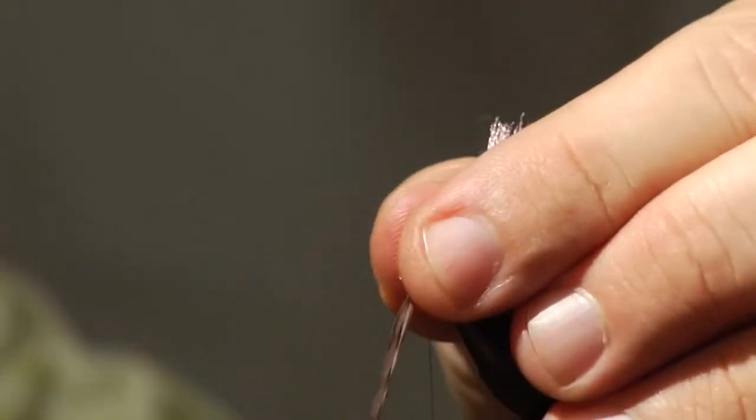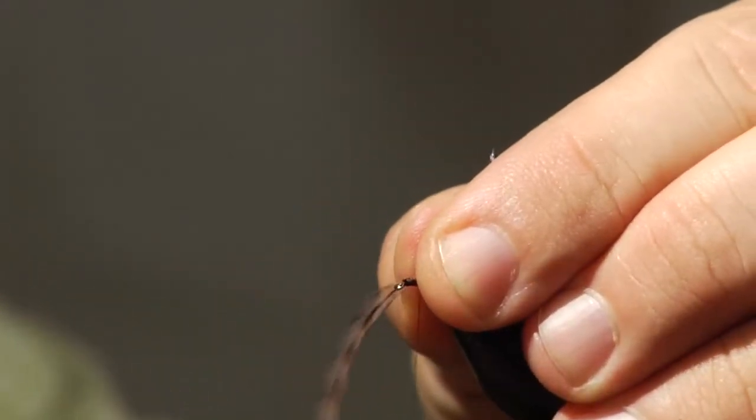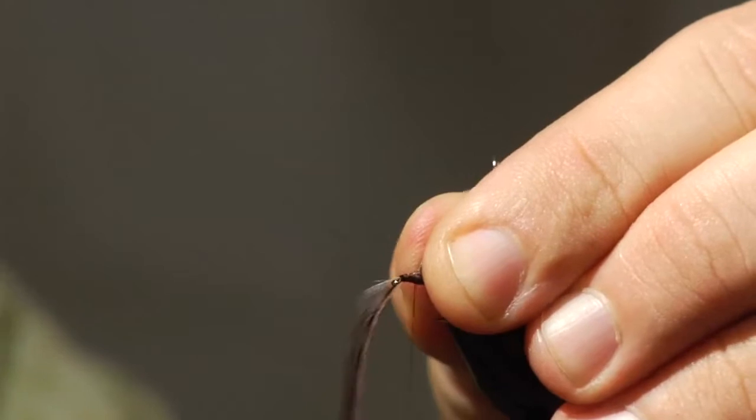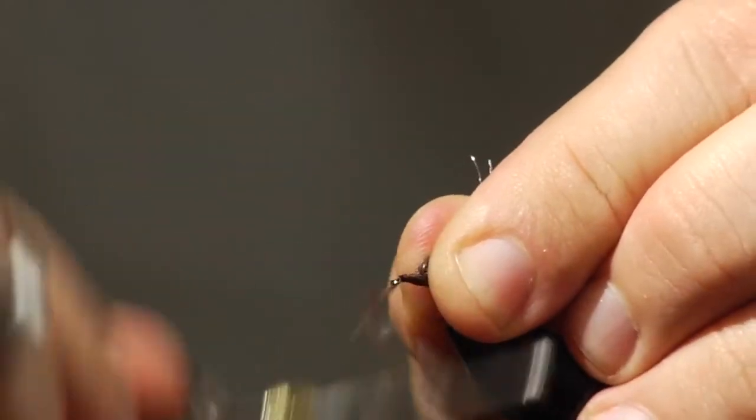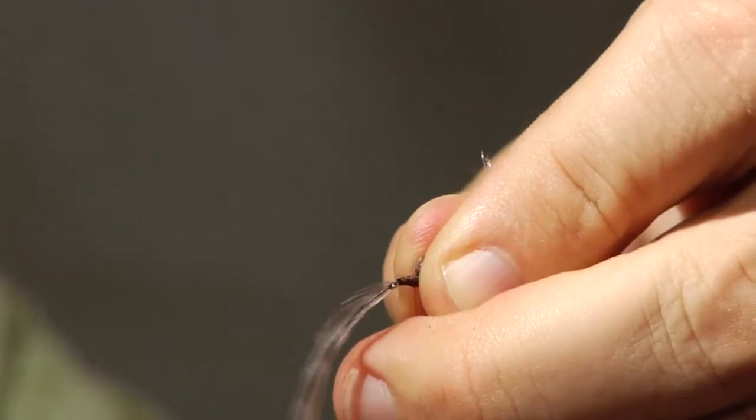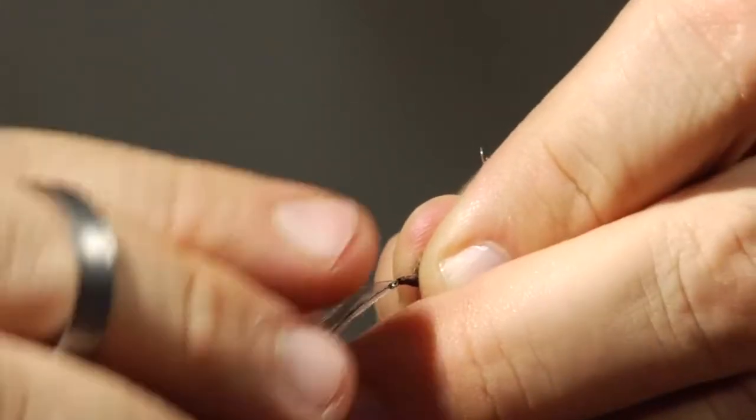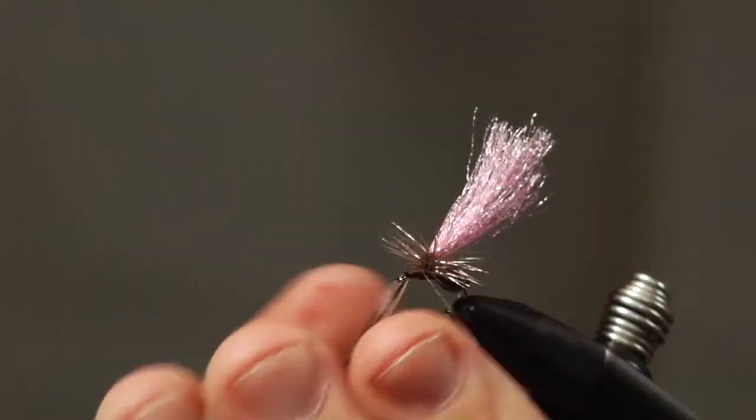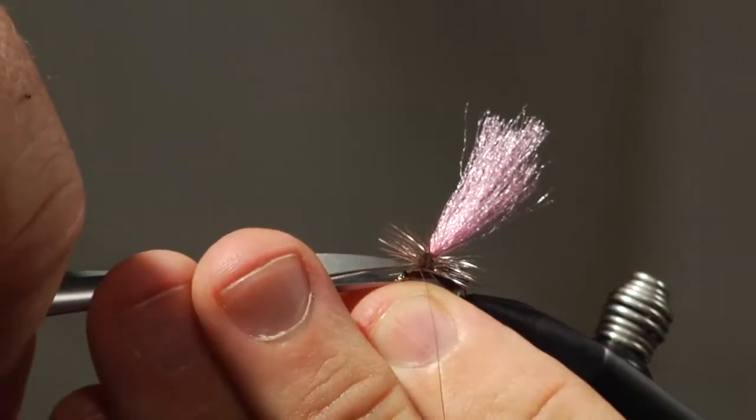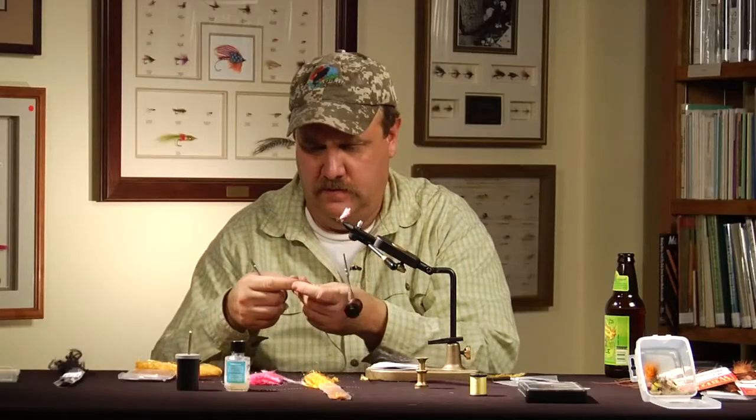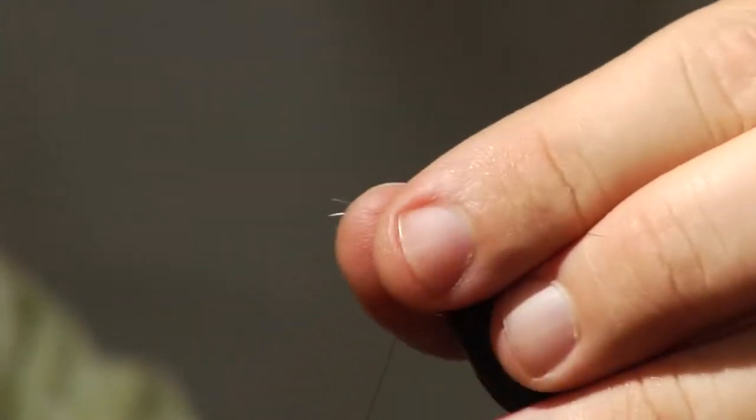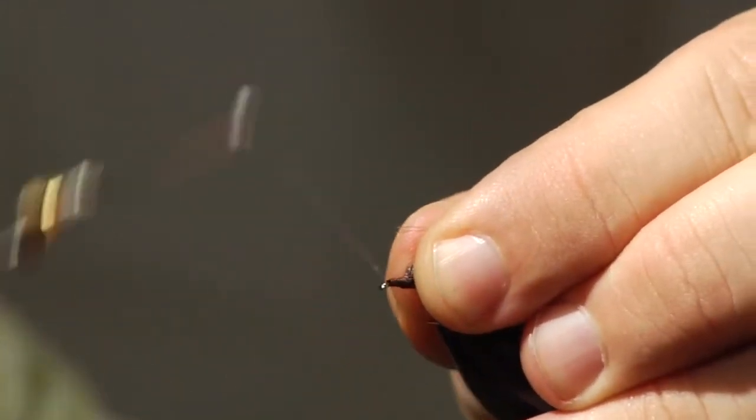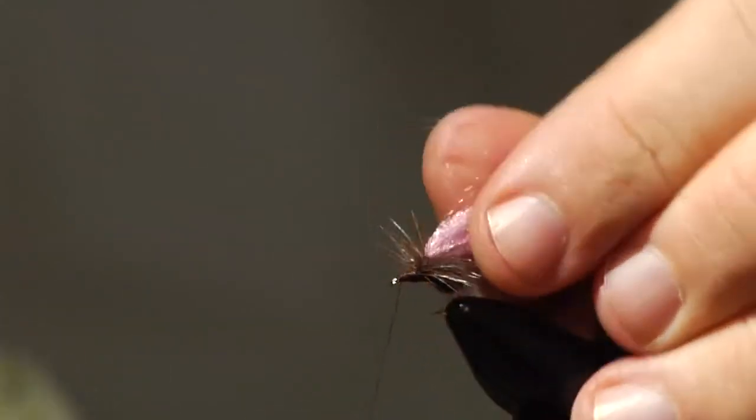I've got enough hackle on there. I'm just going to grab all that out of the way with my fingers. Make sure it's tied off good. Pull that out of the way, trim it. And I'm going to carefully make sure that I've got that stem all the way wrapped down. Come up right to behind the eye.